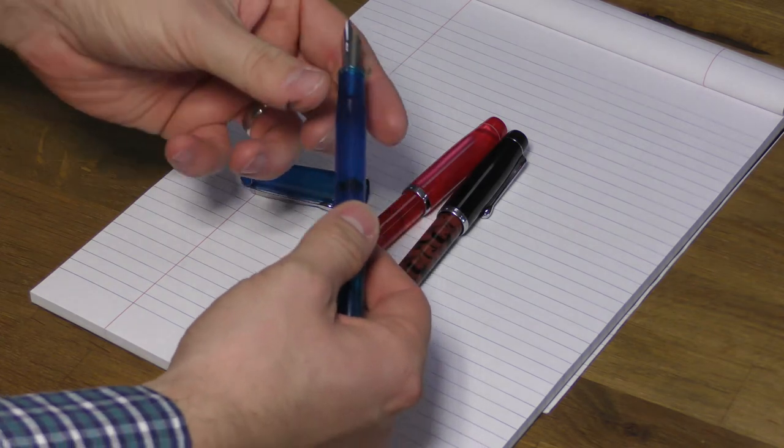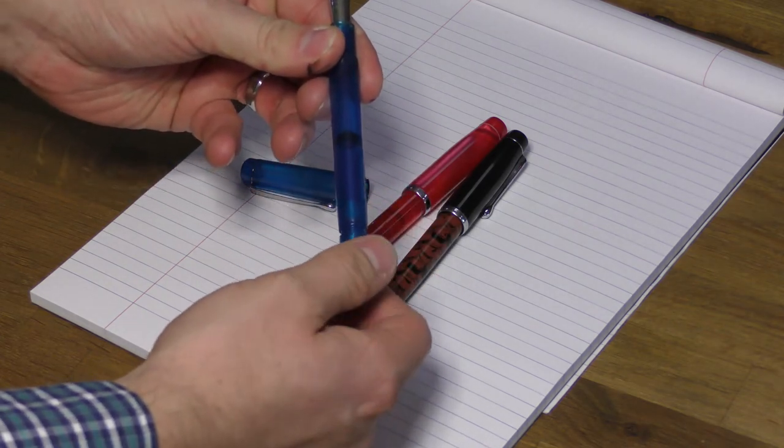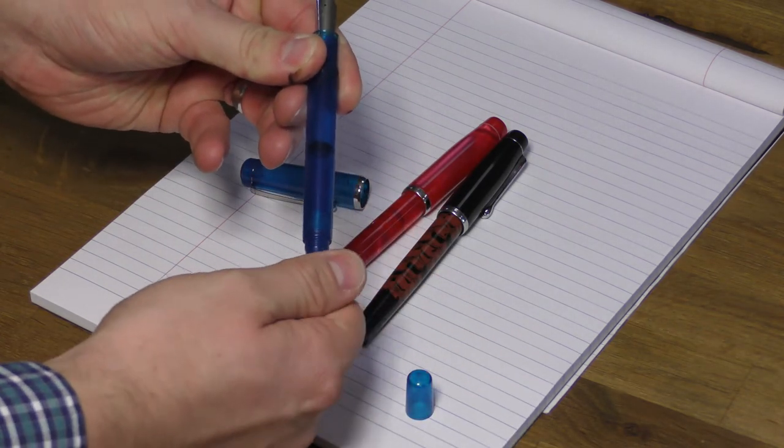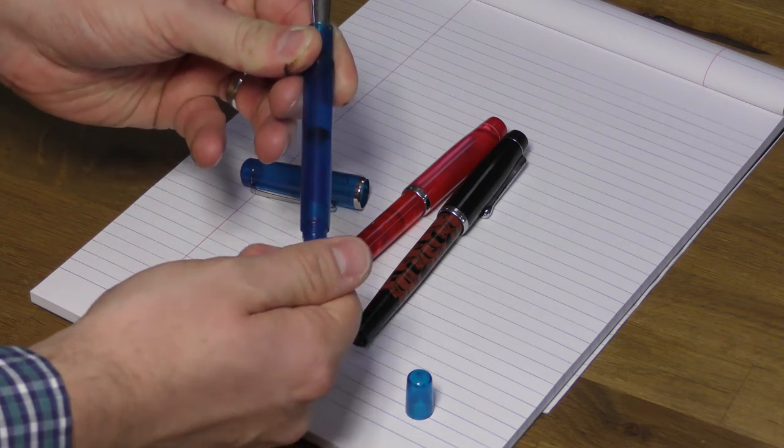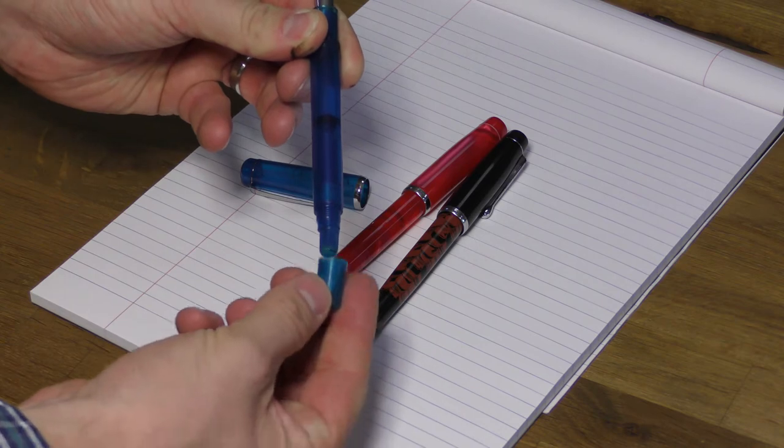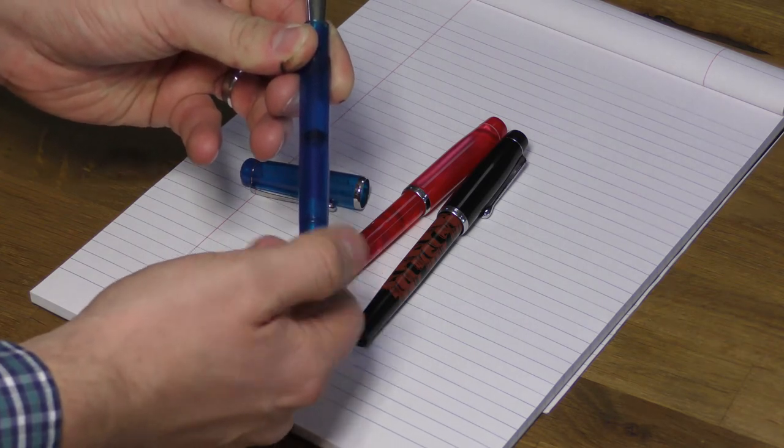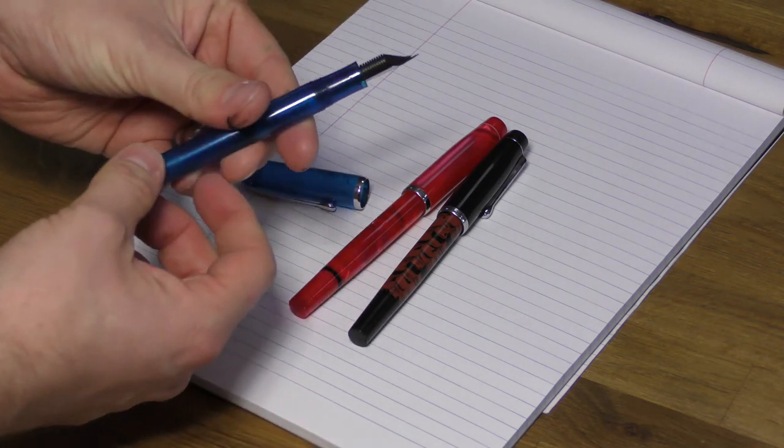The Conrad is a step up in size from the Nib Creeper but not as large as the Ahab. You'll get the same wetness as you do from the Ahab nib as they both have the same size 6 flexible nib. The piston mechanism is hidden under what's called a blind cap, so you take the end of the barrel off and then use it in the same way that you would a standard piston fountain pen.